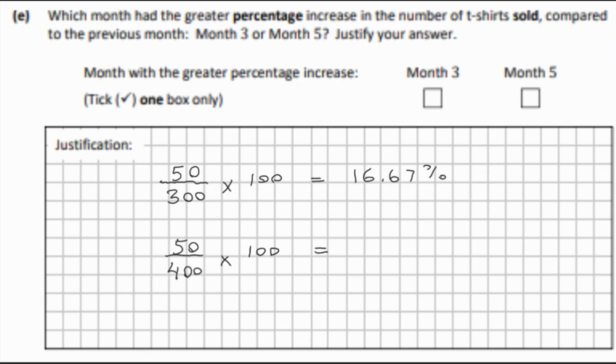That will give one-eighth, or 12.5%. So the greater percent increase is in Month 3, and it will be 16.67%.